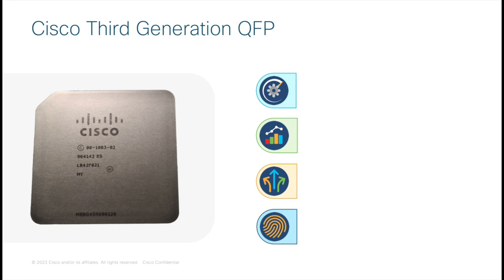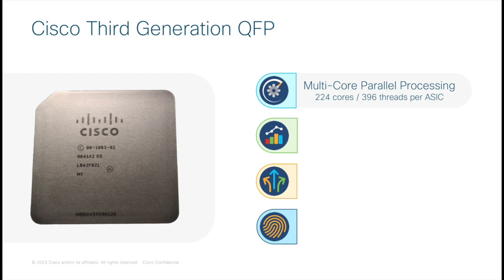Just like our previous ASR1000 routers, the Catalyst 8500 routers use the third generation of the Cisco QFP, or Quantum Flow Processor, ASIC for the data plane. There are a total of four of these ASICs powering the data plane. The QFP ASICs were designed to work standalone or in a matrix of two or four chips to extend data plane capacity. A single QFP 3.0 ASIC has 224 cores and each core is quad-threaded, bringing the C8500 20X6C to 896 cores and 3584 threads — meaning more than 3500 packets can be in flight simultaneously for massive parallel processing.